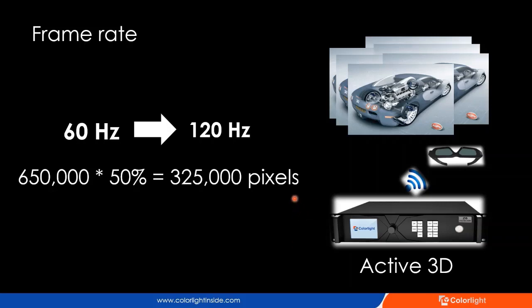As we know from the formula, there are two main factors that affect the maximum loading capacity: frame rate and the color depth of the input source. In theory, if you reduce the frame rate to 50 or 30 Hz, each output port can handle more pixels. But to ensure image quality and performance, we recommend that the maximum loading capacity should not exceed 650,000 pixels. In some special applications like active 3D, the video frame rate will reach 120 Hz. In this case, if the frame rate is doubled, the loading capacity is only half of the original.